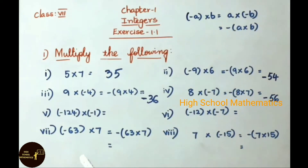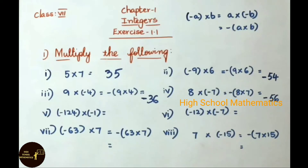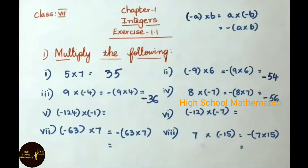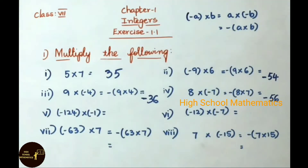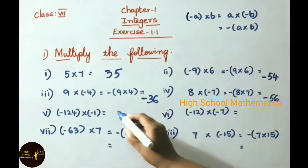See now the fifth sum: minus 124 into minus 1. Whenever we multiply two negative integers, the answer will be a positive integer. Minus into minus gives plus, so 124 into 1 equals 124.